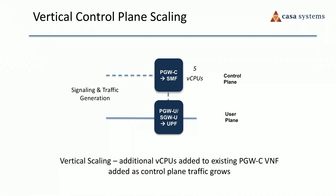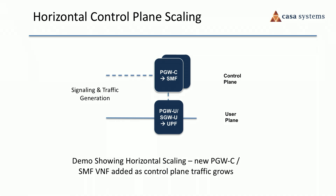We'll first demo vertical control plane scaling. We'll start off with our lean configuration of 5 virtual CPUs, and as we add capacity, we'll increase the number of virtual CPUs — that's what we call vertical control plane scaling. Next, we'll look at horizontal control plane scaling. In this case, as we add capacity, we'll be adding incremental VNFs.